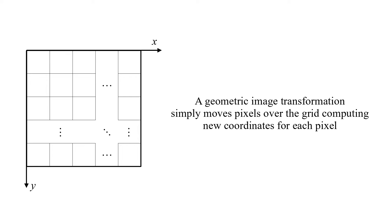A geometric image transformation simply moves pixels over the grid, computing new coordinates for each pixel.